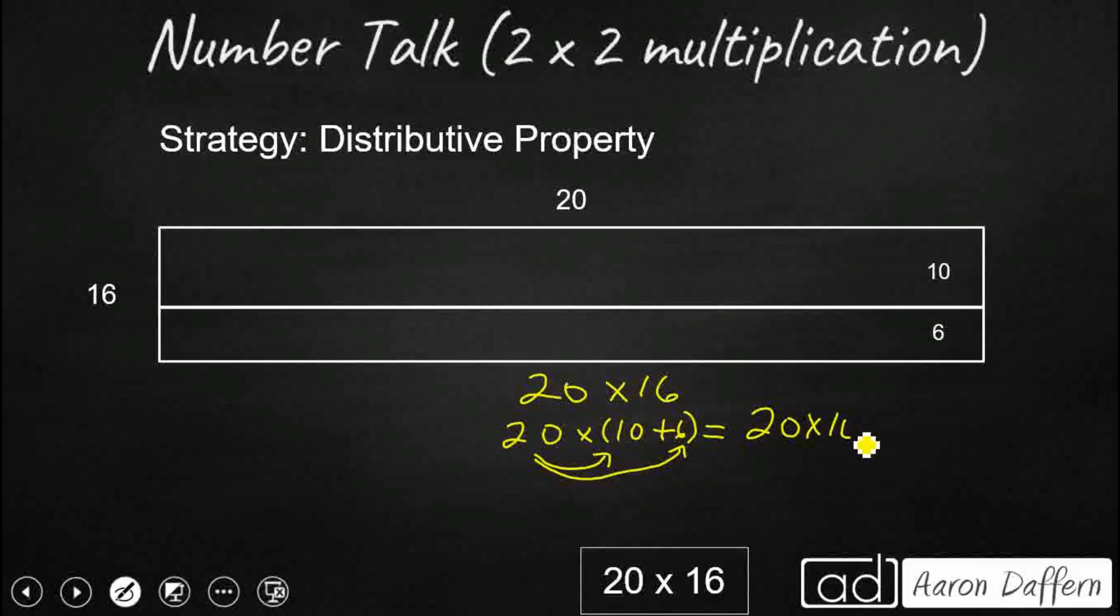We're still going to take that 20 and multiply it by both addends to get our partial products. So 20 times 10. Well, let's use that strategy of multiplying by multiples of 10, 100, 1,000. Multiply your two non-zero digit numbers. Two times 1 is 2. And I've got two zeros. So there we go. I've got 200 plus 20 times my 6. We're going to use that same strategy. Two times 6 is 12. I've got one zero to add: 120. So 200 and 120, that's pretty simple to add. Still gets us up to 320.